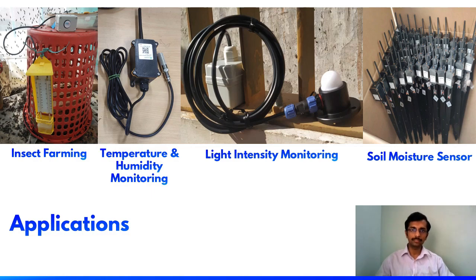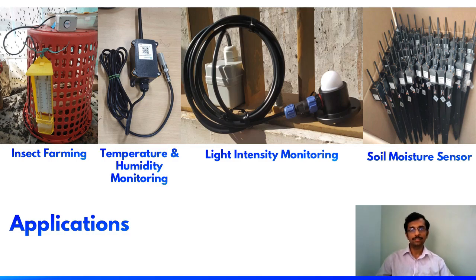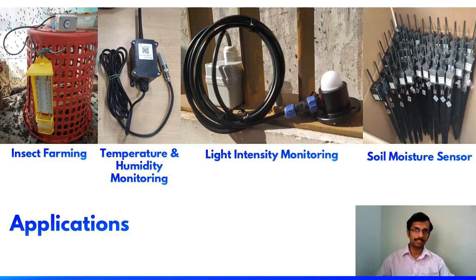The first two are LSN50 LoRa sensor nodes version 1 and 2, interfaced with the SHT31 sensor probe, capable of measuring temperature and humidity. Next is a LUX sensor, where we can monitor the light intensity of various places and make some automation in the back end. The last one is an agricultural sensor node, where we can measure multi-level soil moisture using this particular product. All these products can be manufactured using this LoRaWAN sensor node.